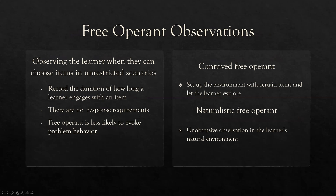A free operant observation tends to be very hands-off. We're observing someone in their natural scenario — unrestricted situations. You put the learner in free operant situations and record the duration of how long they engage with an item. There are no response requirements; they have free reign over whatever's available. This is less likely to evoke problem behavior, so if you have a new client with no rapport, or a client who tends to engage in problematic behaviors when things are denied, free operant might be a good way to go. It's also very natural, giving clients a chance to just be themselves with less reactivity compared to trial-based observations.